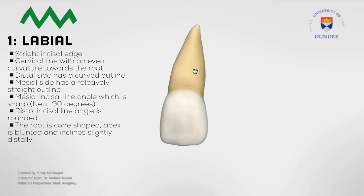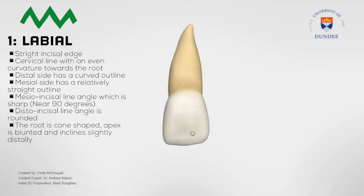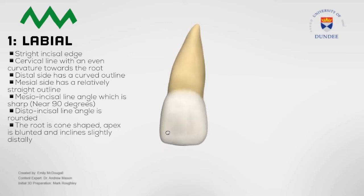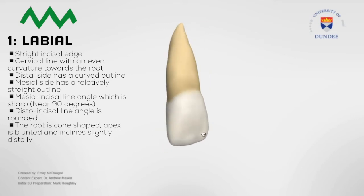From this viewing aspect we can use the mesial incisor line angle, which is sharp at 90 degrees relative to the distal incisor line angle, to distinguish which maxillary central incisor we're dealing with — is it the right or is it the left?